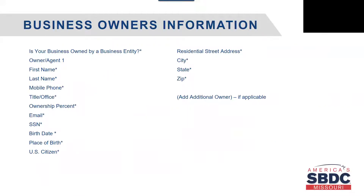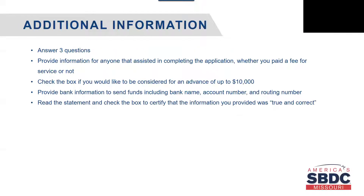Here you will answer one question at the top of the page asking if your business is owned by a business entity, yes or no, and then you will complete the information for the owners. What you see here is the required information for owner/agent one. If there are additional business owners, there will be a button near the bottom of the page that you will select and you will be able to add second or third business owner information. Once all of the business owners' information has been added, you can continue on to the additional information page.